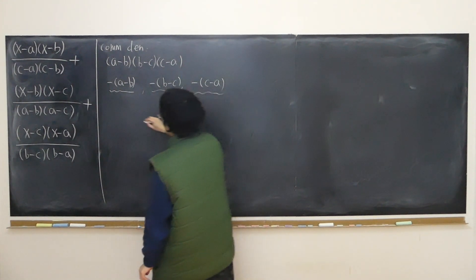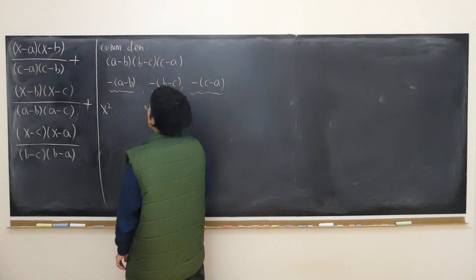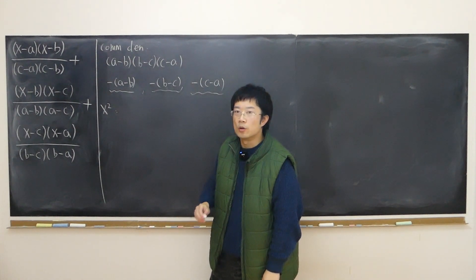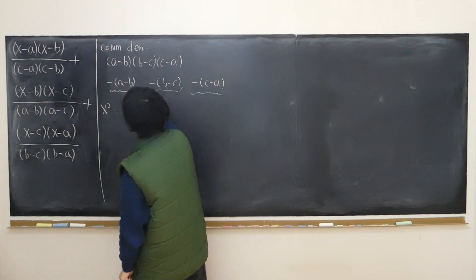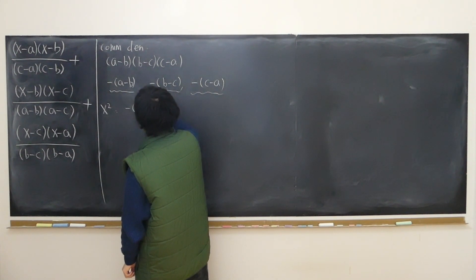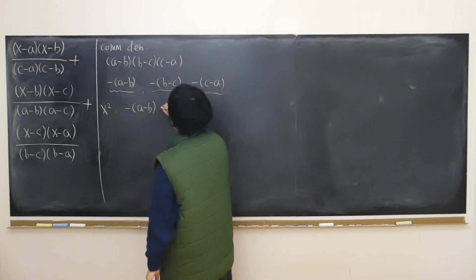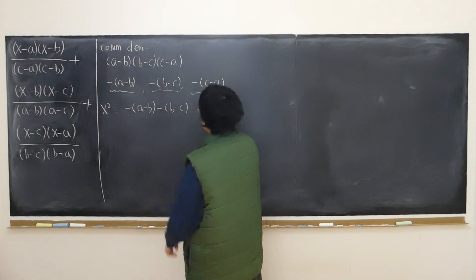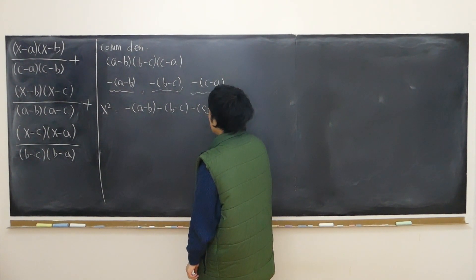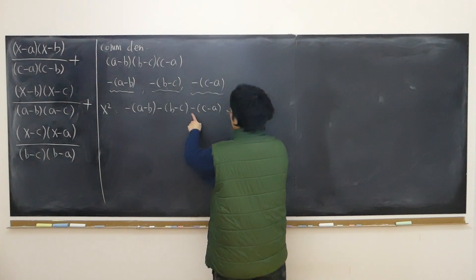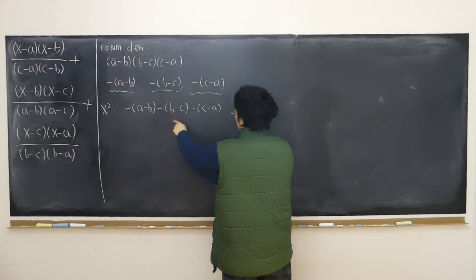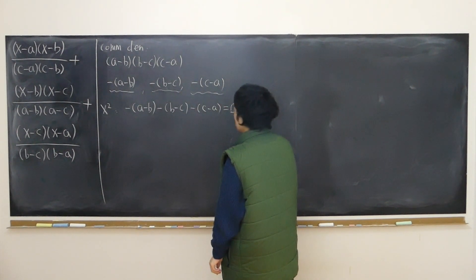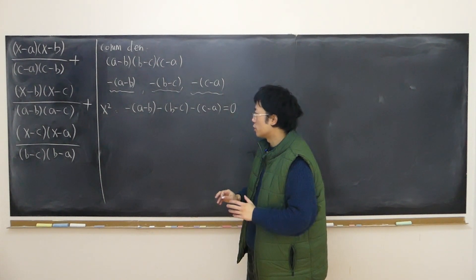Then I'm going to group all the x-squared terms — their coefficients. First term: x-squared times this constant gives negative of (a minus b). Likewise, second term gives negative of (b minus c), third term gives negative of (c minus a). The coefficient of the x-squared term: minus-minus-a plus a cancels out, minus-minus-b plus b minus b cancels out, minus-minus-c plus c minus c cancels out. So the coefficient of the x-squared term is just zero — there's no more x-squared term.